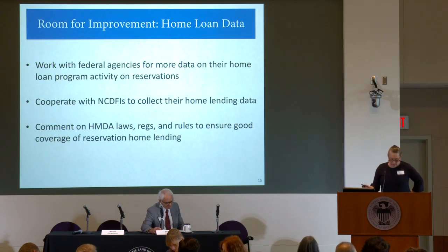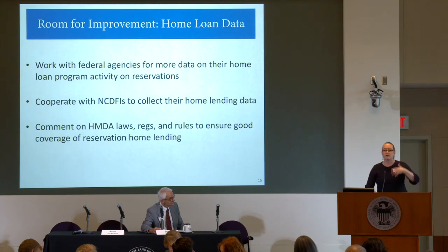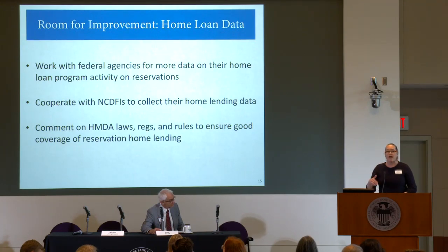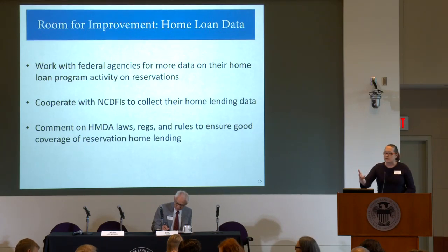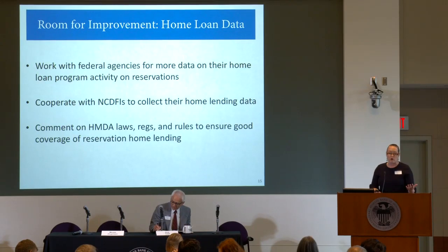Another piece of data that came up in one of our small groups: beyond land data, it's also really important to have a complete picture of what housing exists on a reservation. Some communities have actually mapped every structure, every permanent dwelling — understanding where it came from, whether it was built by HUD, whether it's still under control of the TDHE, whether it's rent-to-own, or a site-built home under homeownership. Knowing what that market really looks like is another piece of homeownership data that will help these markets function better.